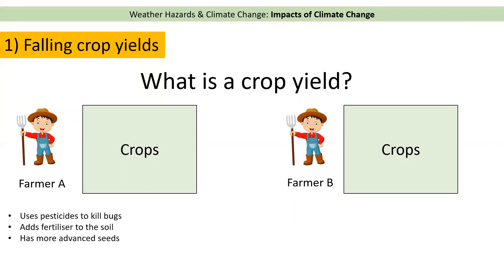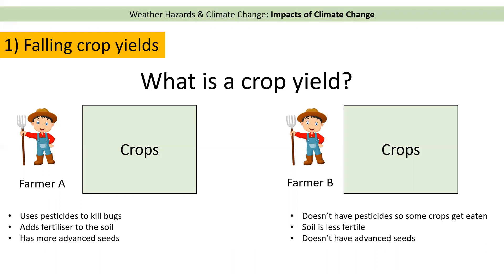Farmer A can use things like pesticides — he can spray that onto his crops and it kills the bugs that eat them. He might also add fertiliser to the soil to make it more fertile and to make the crops grow more quickly, and he may have more advanced seeds, modified to grow more quickly or in a certain way. Farmer B, living in a developing country, doesn't have pesticides so some of his crops get eaten, the soil is less fertile, and he doesn't have those advanced seeds.